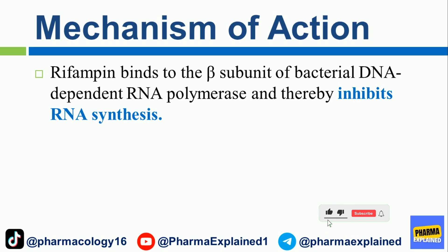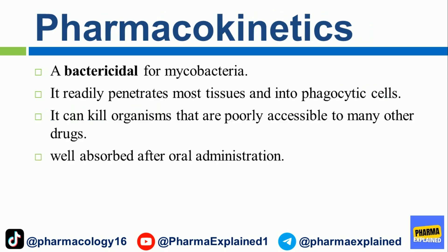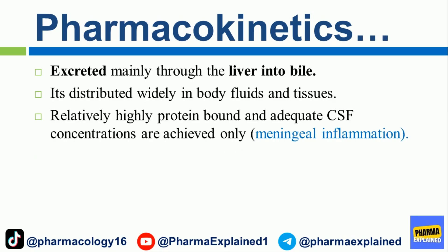Mechanism of Action: Rifampin binds to the beta subunit of bacterial DNA-dependent RNA polymerase and thereby inhibits RNA synthesis. Pharmacokinetics: It is bactericidal for mycobacteria and readily penetrates most tissues and into phagocytic cells, allowing it to kill organisms that are poorly accessible to many other drugs. Well absorbed after oral administration and excreted mainly through the liver into bile, it is distributed widely in body fluids and tissues. It is relatively highly protein-bound, and adequate CSF concentrations are achieved only with meningeal inflammation.